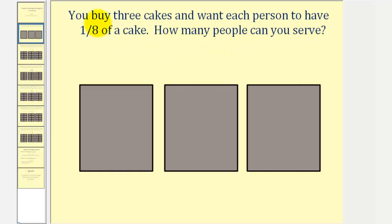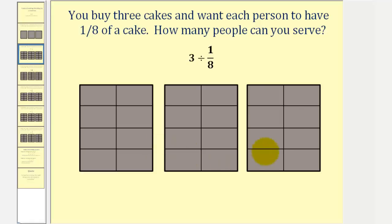If you want each person to have one-eighth of a cake, we want to start by dividing each cake into eight equal pieces. So it probably would look something like this. Our goal is to determine what is three divided by one-eighth, or how many one-eighths are there in three. With this model, we can just count them.